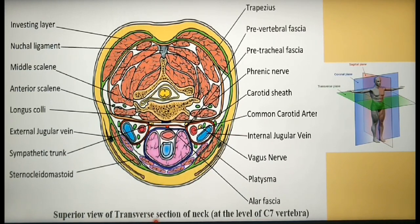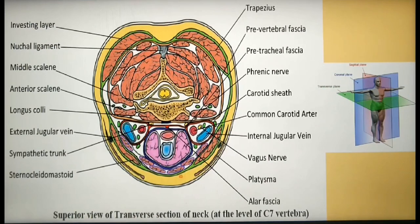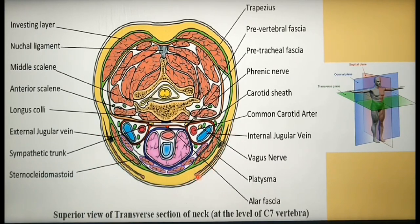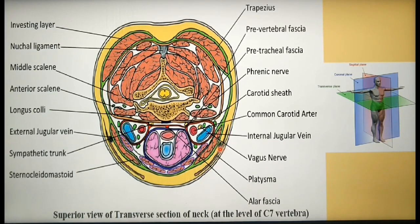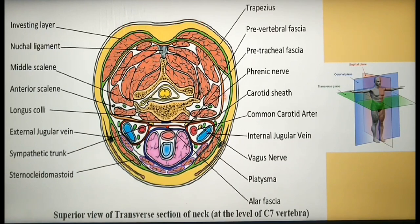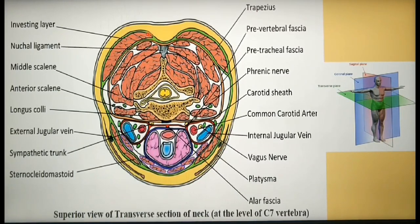Moving from anterior to posterior: anteriorly you can visualize the superficial cervical fascia with the platysma. Beneath the platysma you can identify the external jugular vein. The deep cervical fascia begins at the investing layer, shown in green color, which surrounds the entire neck. You can see the sternocleidomastoid muscle on either side and also the smaller infrahyoid muscles.